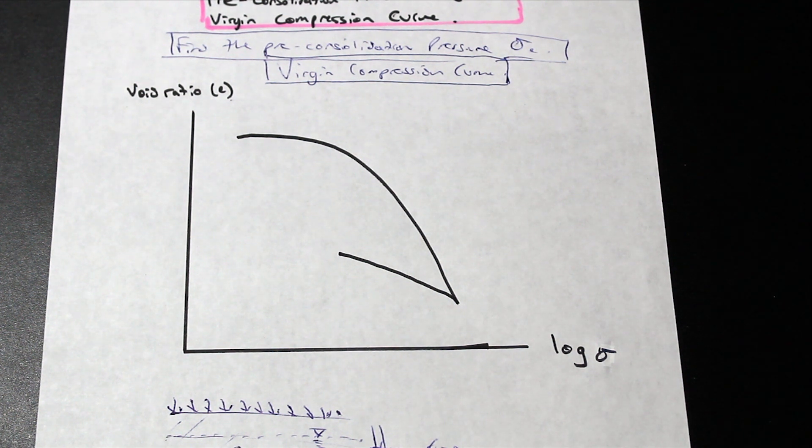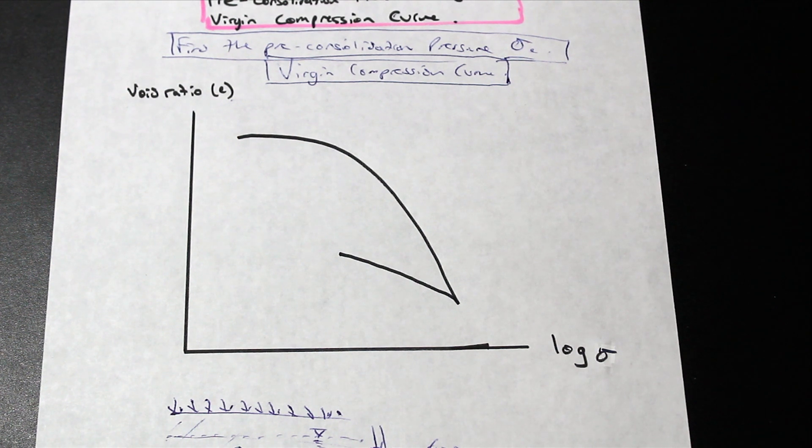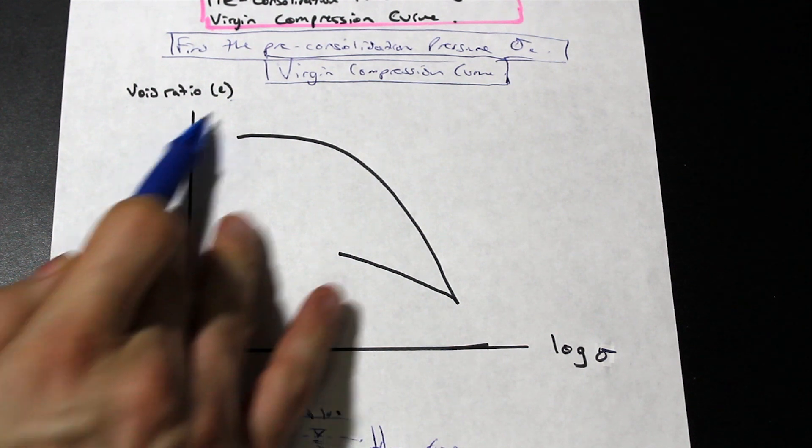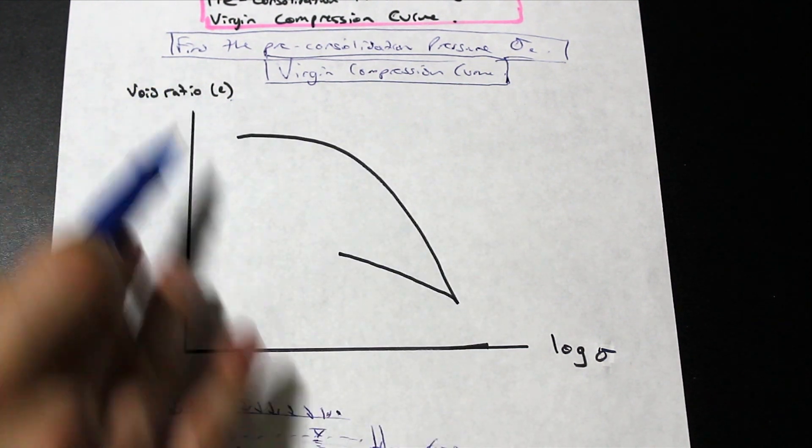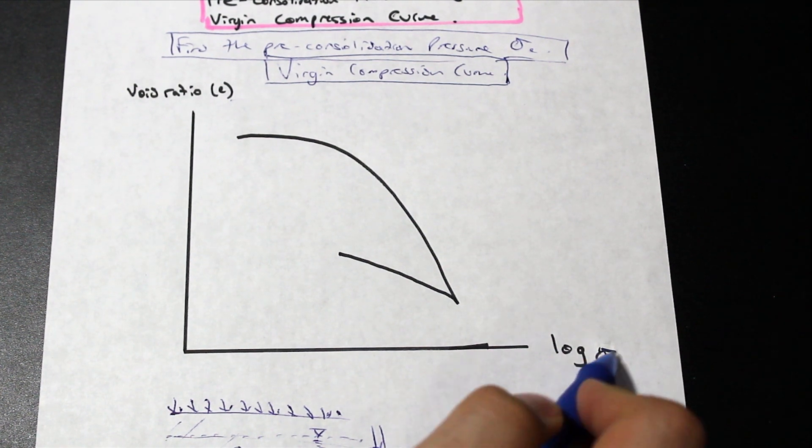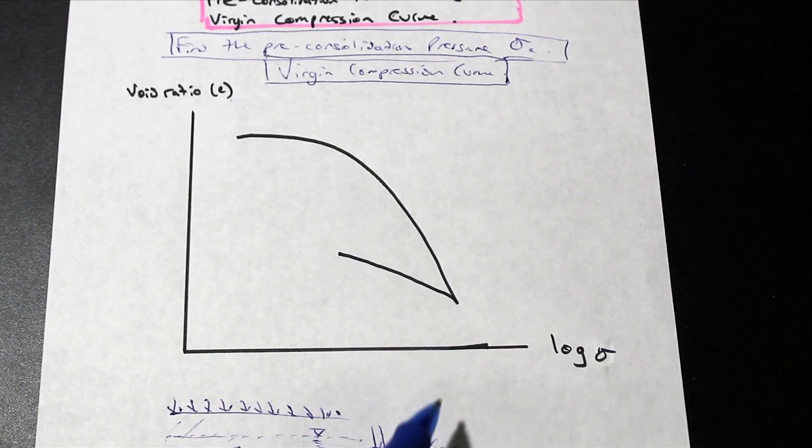slowly increasing the load in order to kind of have an exaggerated idea of what the consolidation would look like on a clay sample. At the end of the consolidation, this is what the void ratio relationship to the log of the stress, the vertical effective stress.